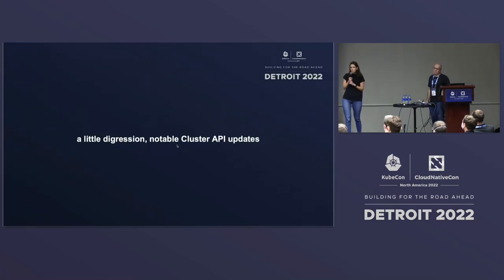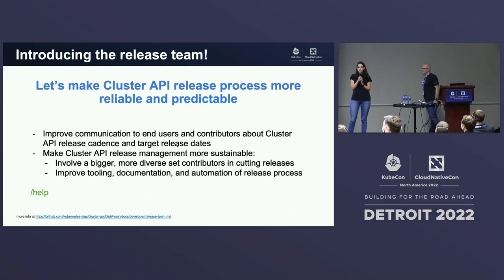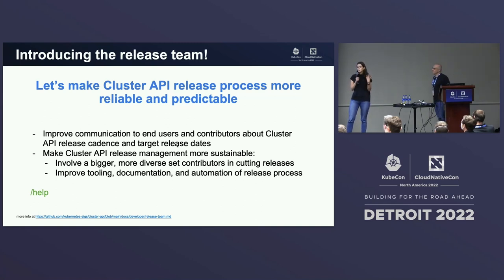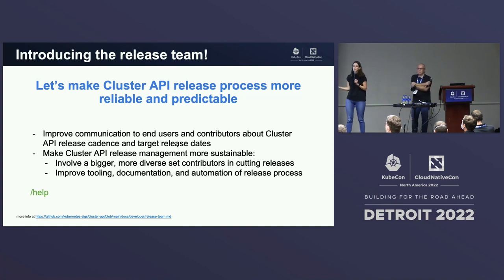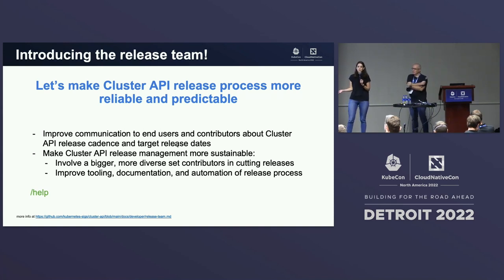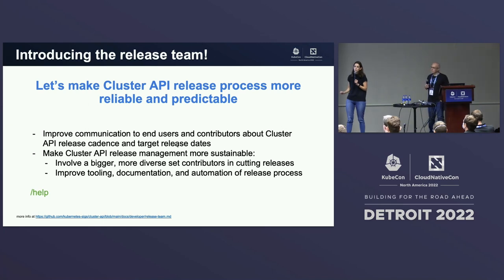We're going to do a brief digression on Cluster API updates, because we're very excited. The first is we are introducing a release team for the project. This is a really big deal — we're trying to improve the predictability and reliability of releases to make it easier for users, providers, and contributors to know when releases are coming. We're also making it more sustainable for the team, enabling a more diverse and larger set of contributors to participate in the release process, and improving our tooling, automation, and docs around release. We've just finalized the release team for the first upcoming release cycle. If you're interested in participating, please reach out in Slack.